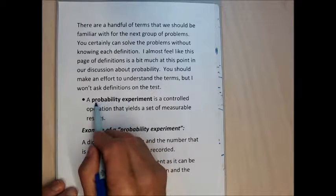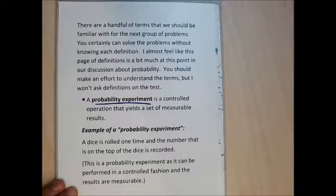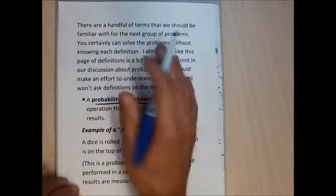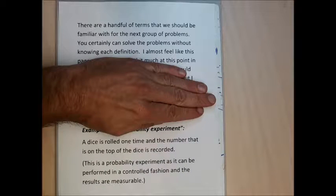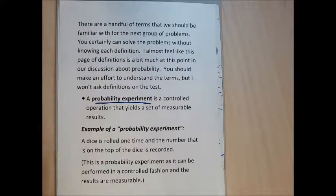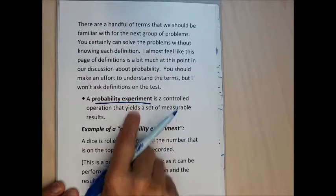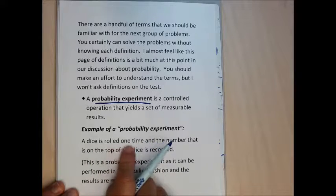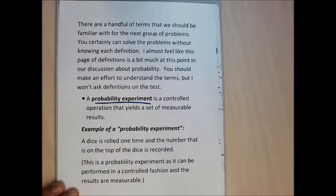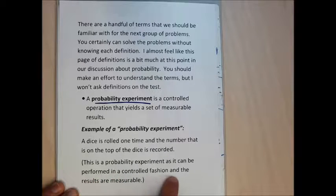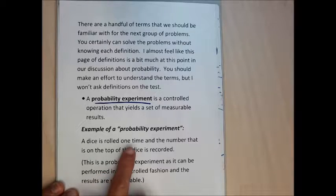A probability experiment is a controlled operation that yields a measurable set of results. Here's an example: a dice is rolled one time and the number on the top is recorded. This is a probability experiment because it can be performed in a controlled fashion and the results are measurable — just looking at the number that comes up on top of the dice.